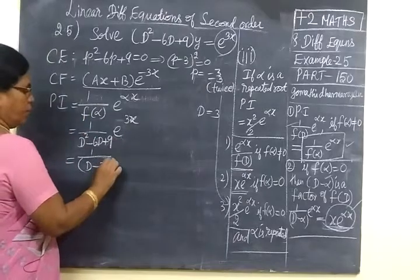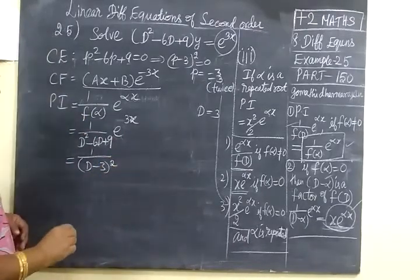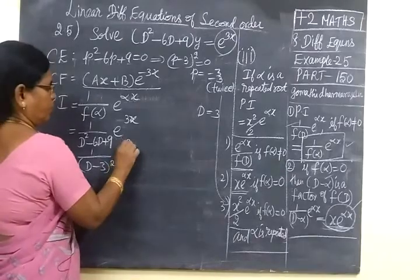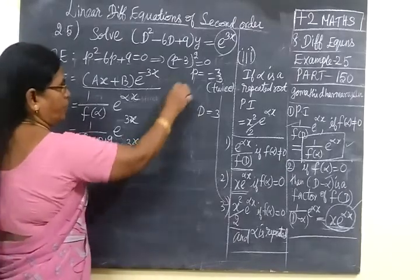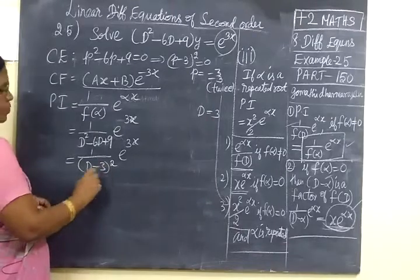d minus 3 whole square. So (d - 3)² × e^(3x). Here alpha is repeated. Repeated means you are writing in this way.